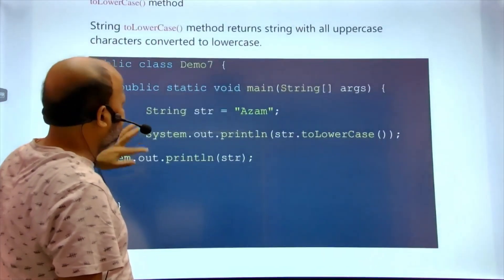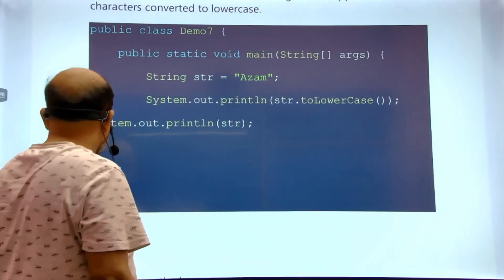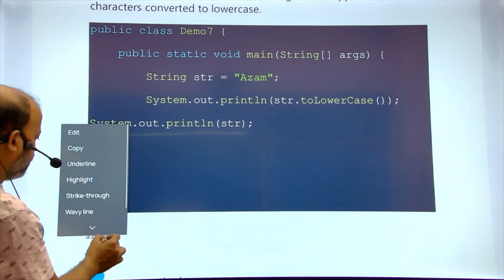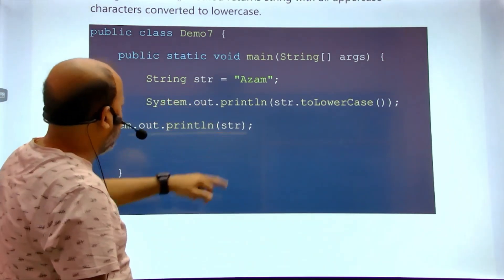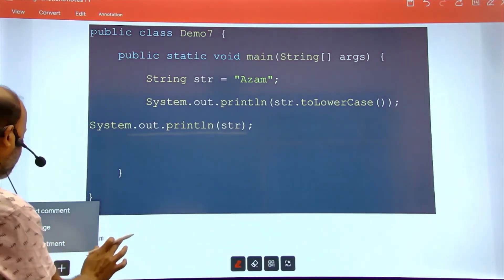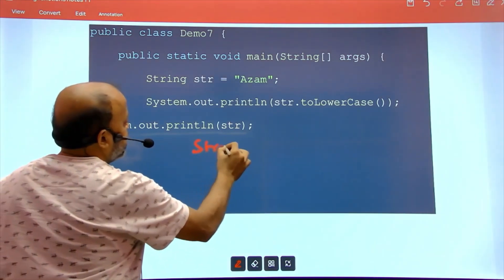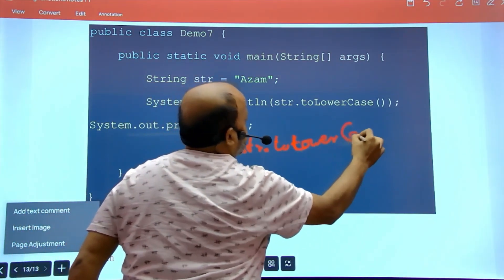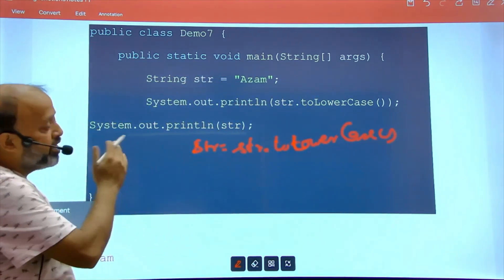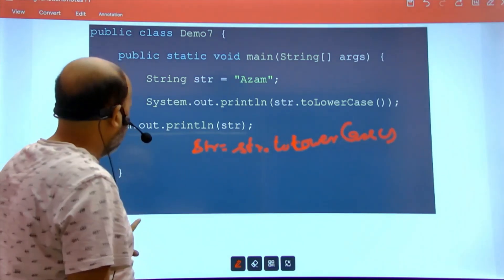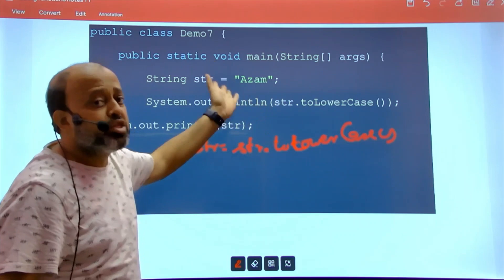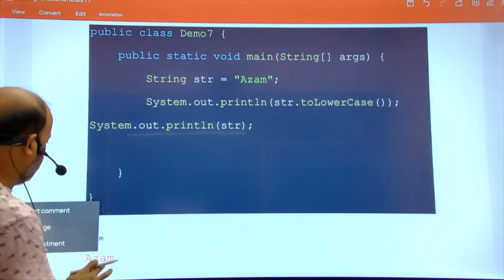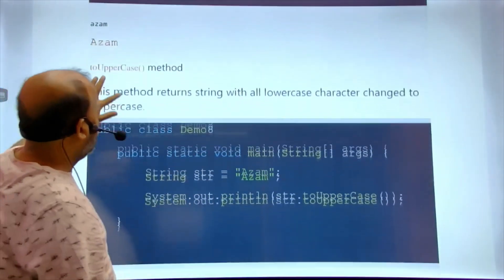toLowerCase() and toUpperCase() are straightforward. For example, converting my name 'Ajam' to lowercase gives 'ajam'. However, to make the change permanent you must write str = str.toLowerCase(); otherwise when you print str again you get the original value. Similarly, toUpperCase() converts the entire string to capitals.